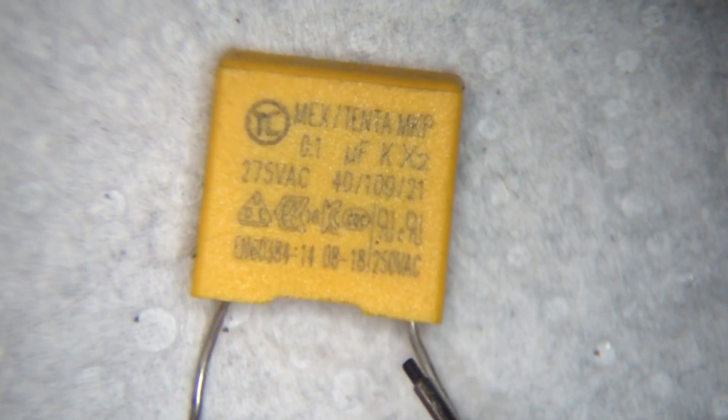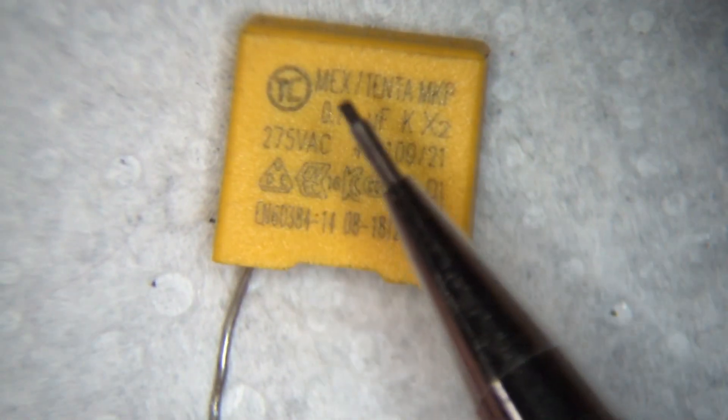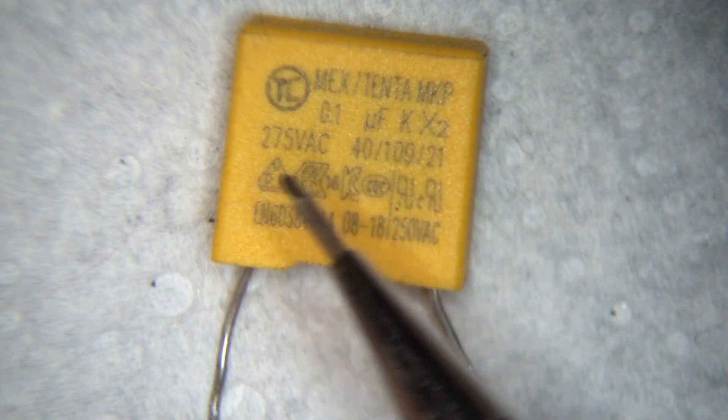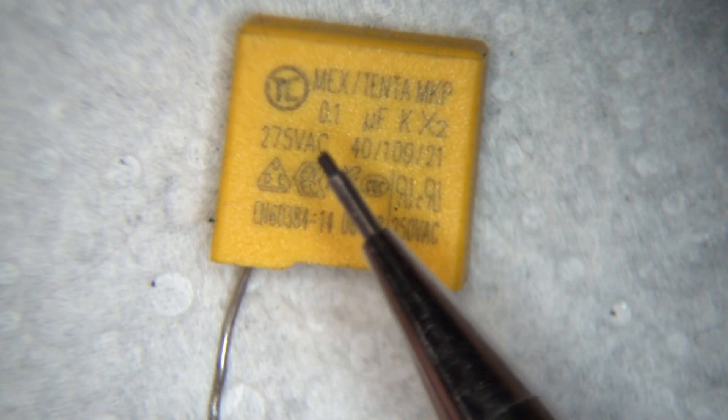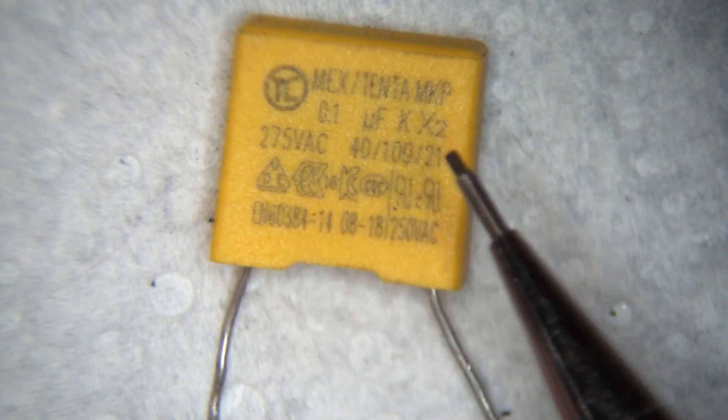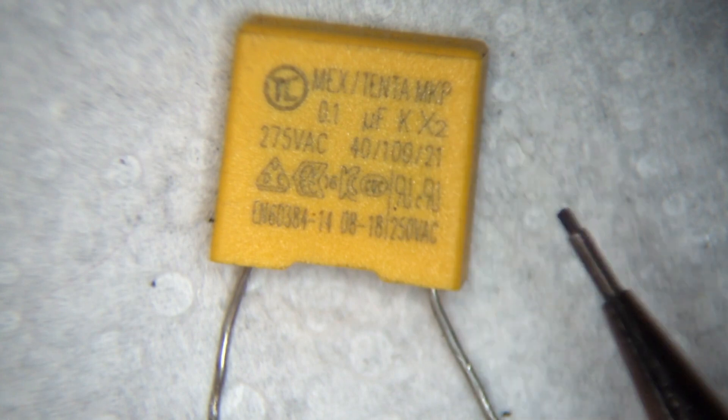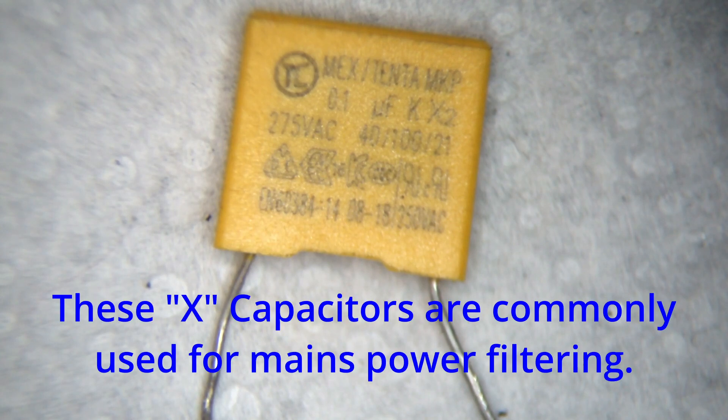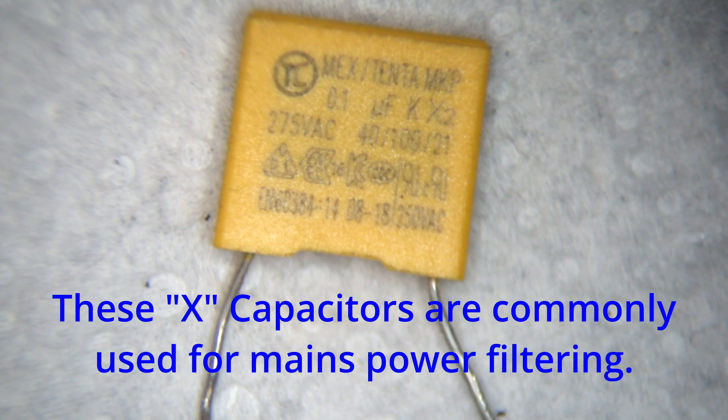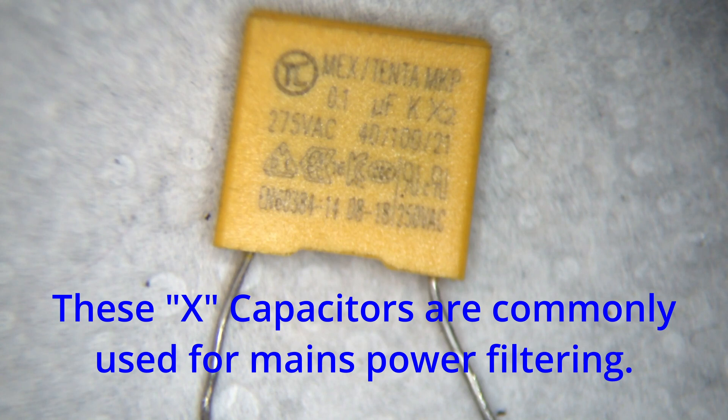And you can see that the markings on here 0.1 microfarad 275 volts AC so it's higher than the other one which is fine and then these are X2 which is the modern standard equivalent of the X so make sure you get one that's intended for the same function the X markings on those capacitors are the function and make sure the right voltage and capacitance is there and then you should be able to replace them one for one.